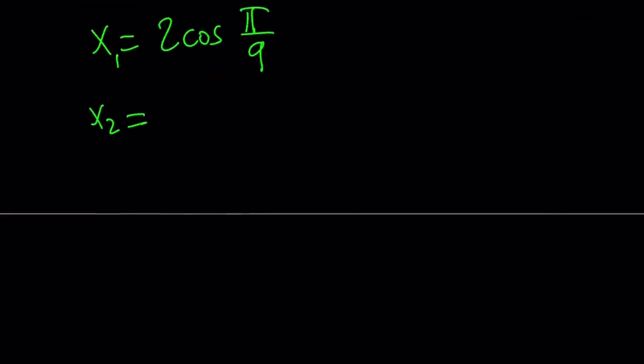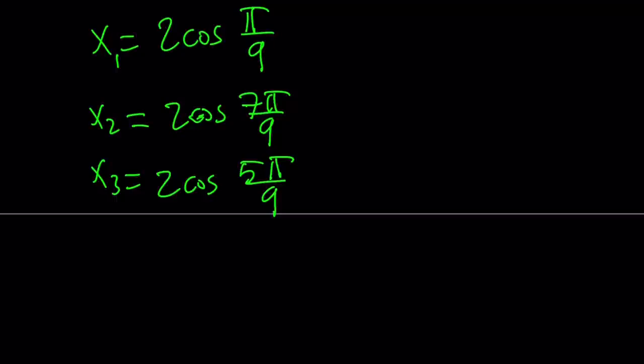We have to add 1/3 of 2π, which is 2π/3, which can be written as 6π/9. Anyway, it's just going to be 2cos(7π/9), and then the third one we can write as 2cos(5π/9). You can do this easy, but those are going to be the solutions.